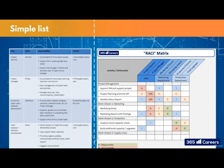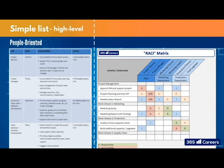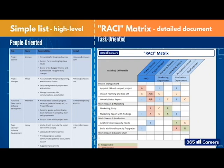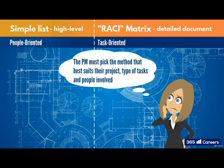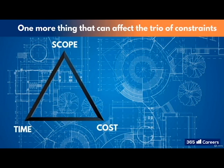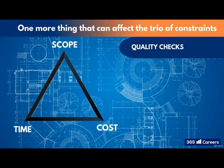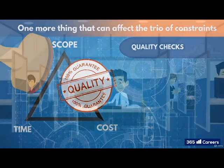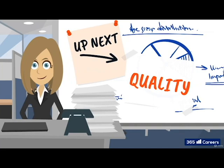Each tool has its benefits. The first is a high-level look which is very practical and quick to create — it is people-orientated and shows who does what. The RACI, on the other hand, is perhaps a more formal document, but it highlights the tasks and shows much more information about who is involved in a particular activity or work stream. The project manager must pick the method that best suits their project, type of tasks, and people involved — it could be one, or the other, or a mixture of the two. There is just one more thing that can affect the trio of constraints: quality checks. Whatever the goal of the project, it must reach quality standards. We're going to look in the next lesson at how the project manager will define these standards and how they're kept throughout the project.